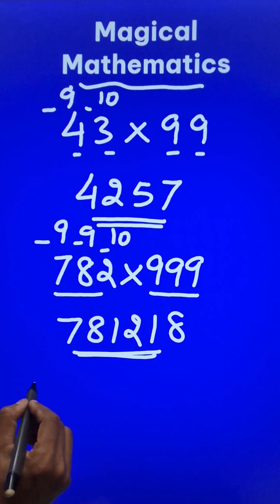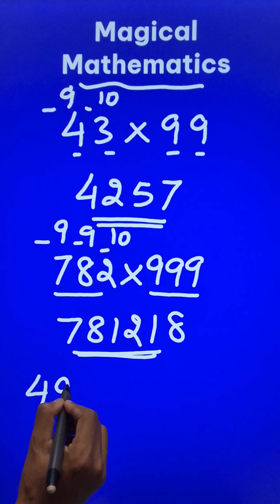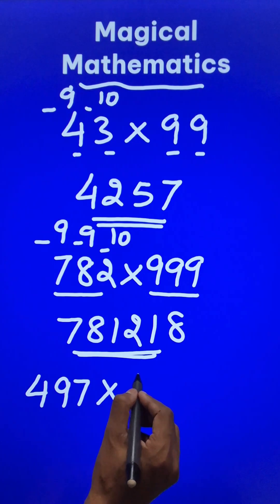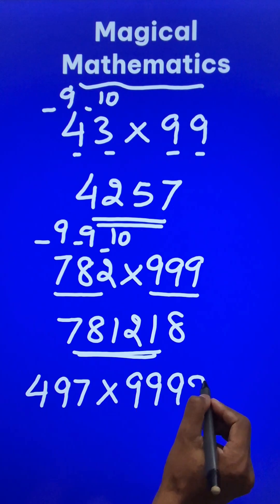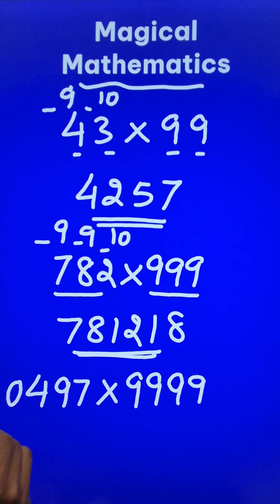Likewise, suppose you have a 3-digit number, 497, and I want to multiply that by four 9s. Now the number of digits here is less than the number of nines, so prefix a 0 to make it equal to the number of nines.